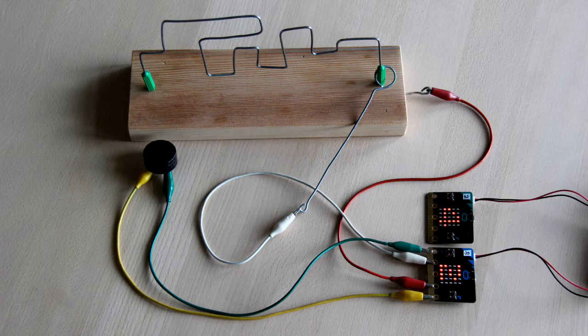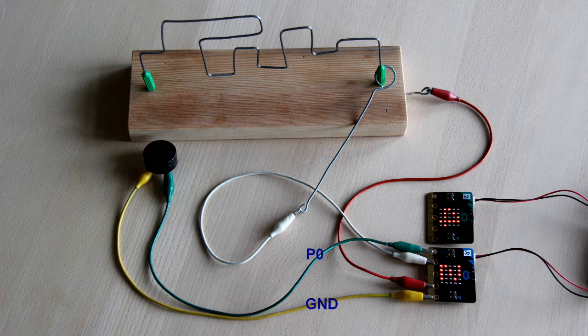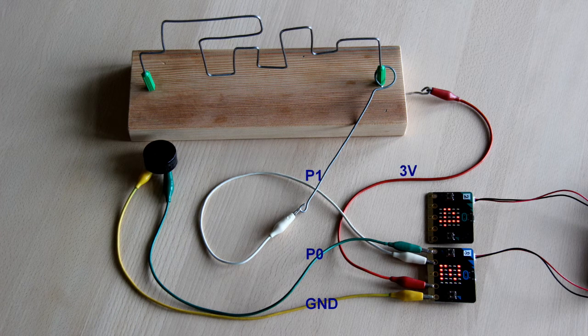The first microbit must be connected to the buzz wire and the buzzer as shown here. The buzzer must be connected to P0 and ground. Connect the buzz wire to 3 volts and the metal eye to P1.